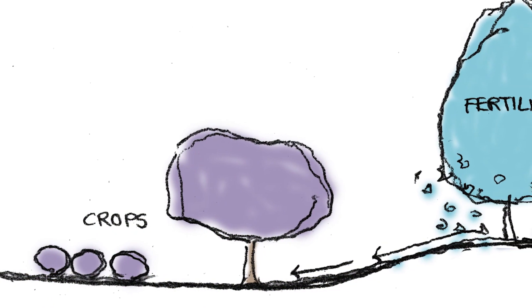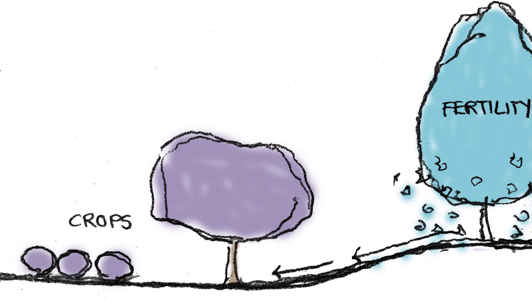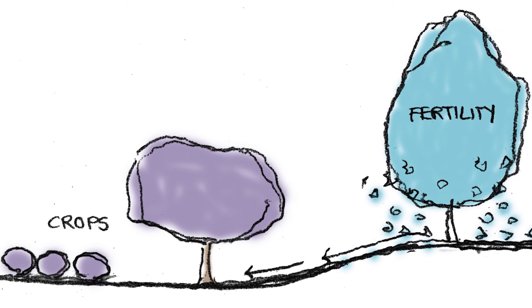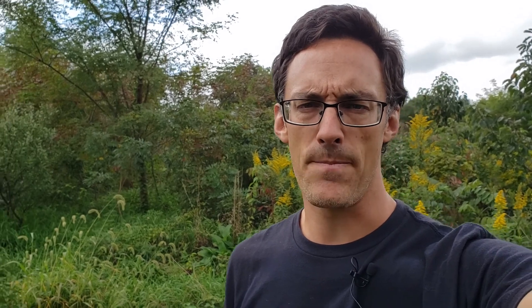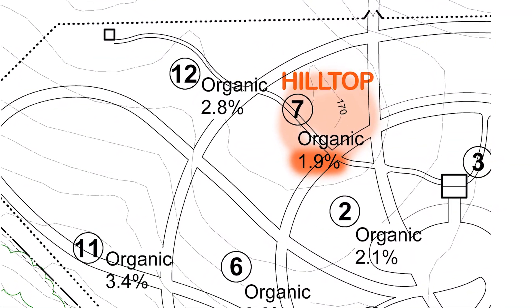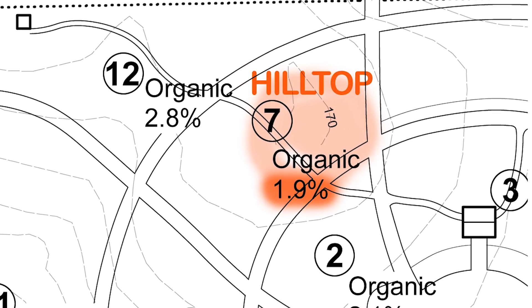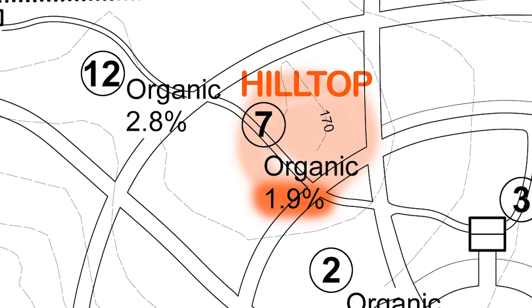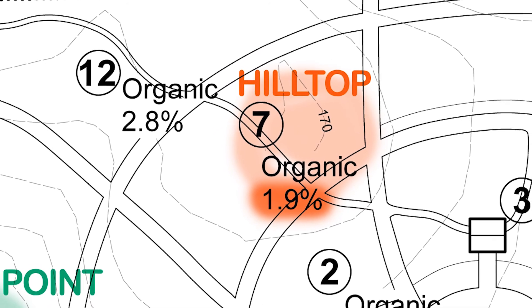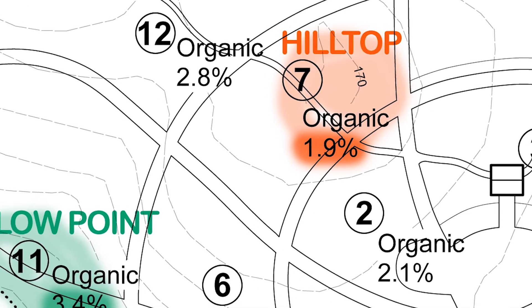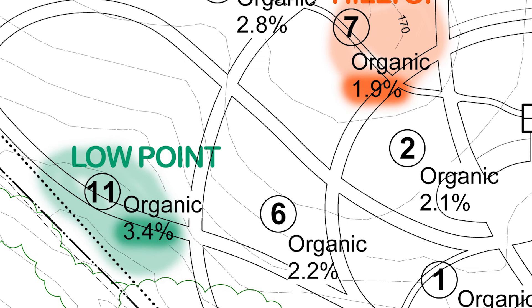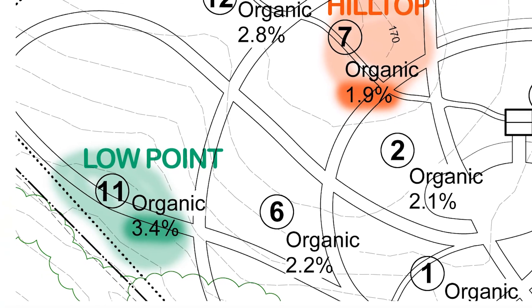If you think about it, the valley bottoms tend to be the most fertile places in the landscape and the hilltops tend to be the least fertile, and that was reflected on this site largely by the soil tests that we did when we initially came here. On this map, the place where we're standing right now is labeled hilltop, and the organic matter measured here was 1.9 percent, which is on the low side, whereas further downhill at the low point, organic matter measured 3.4 percent — a good percent and a half higher — just because of this trend for organic matter to move downhill.